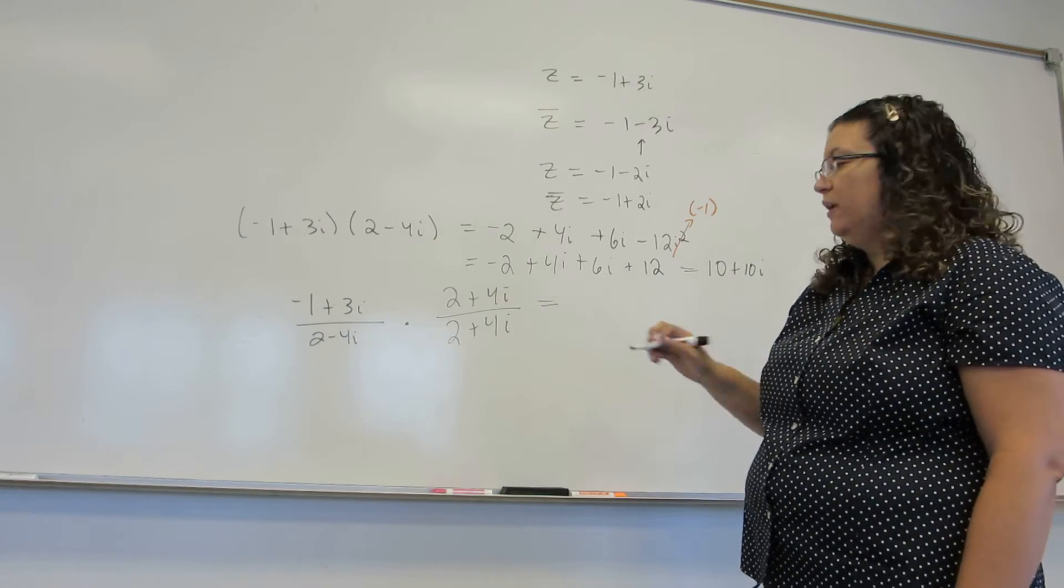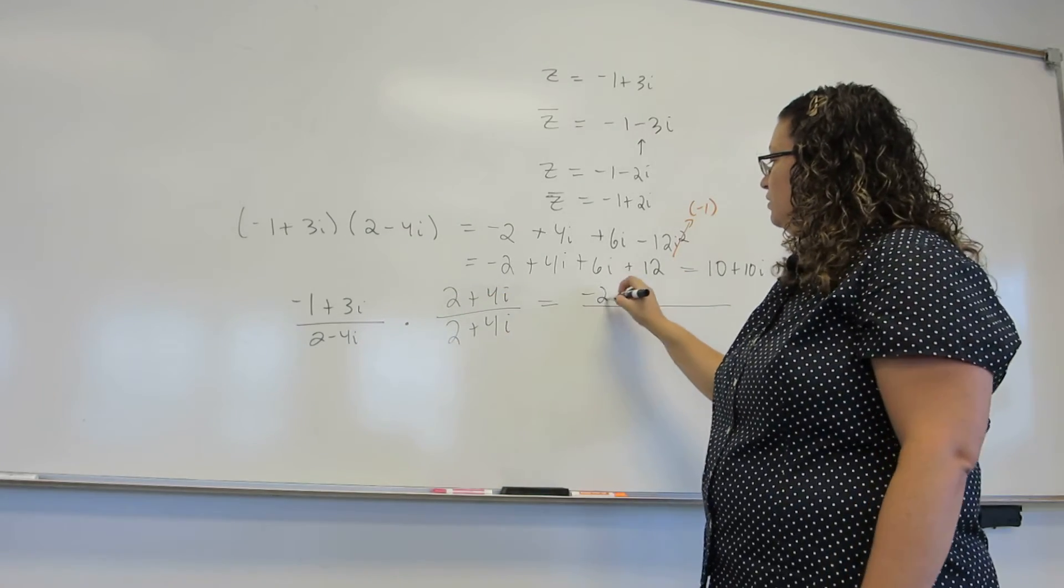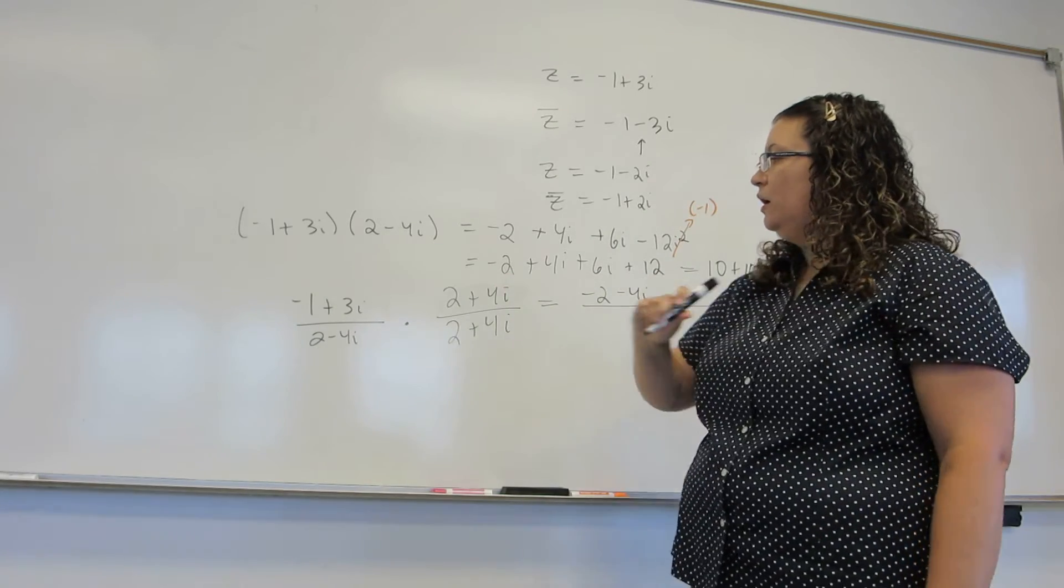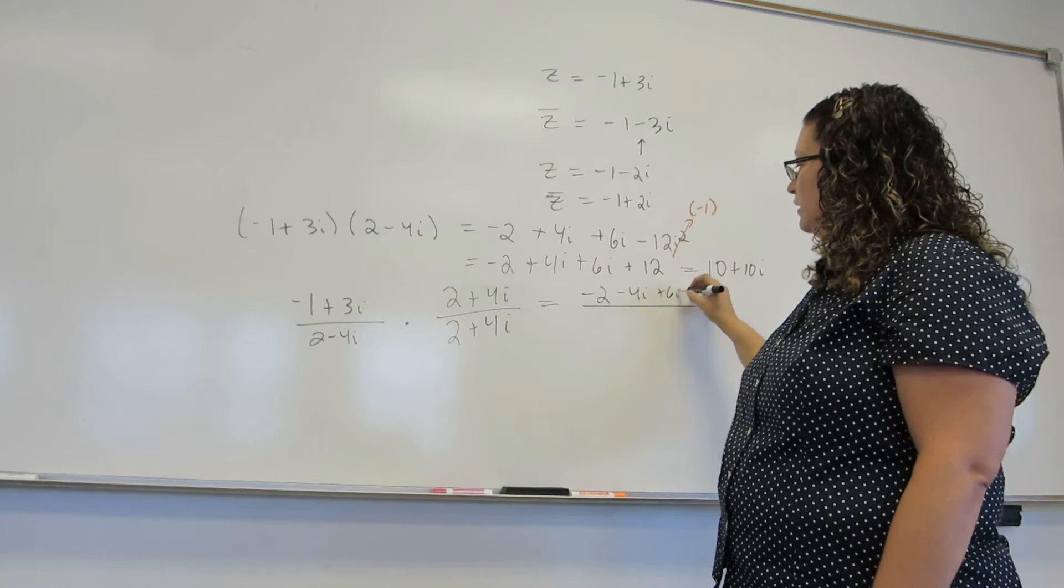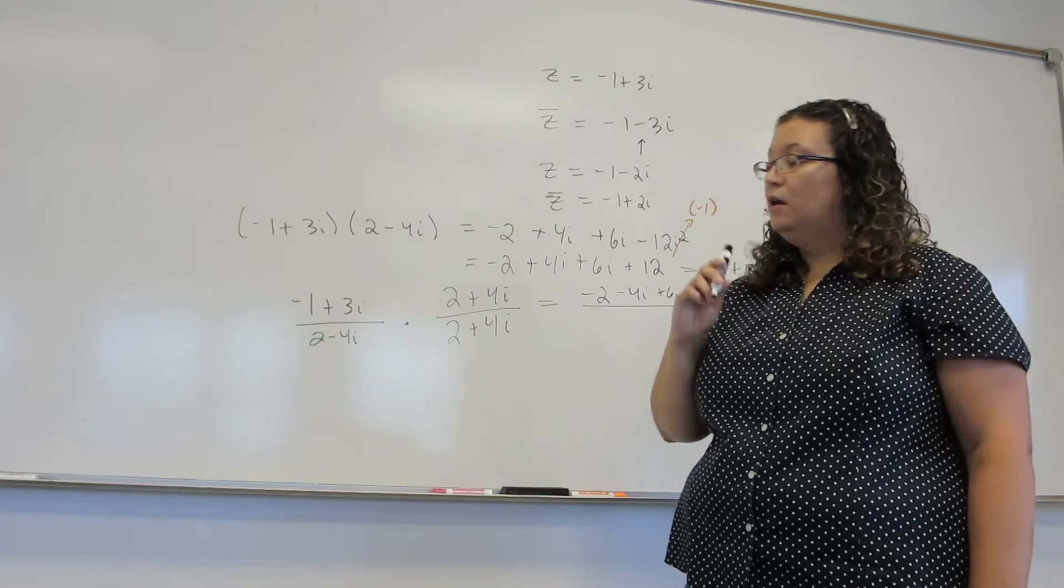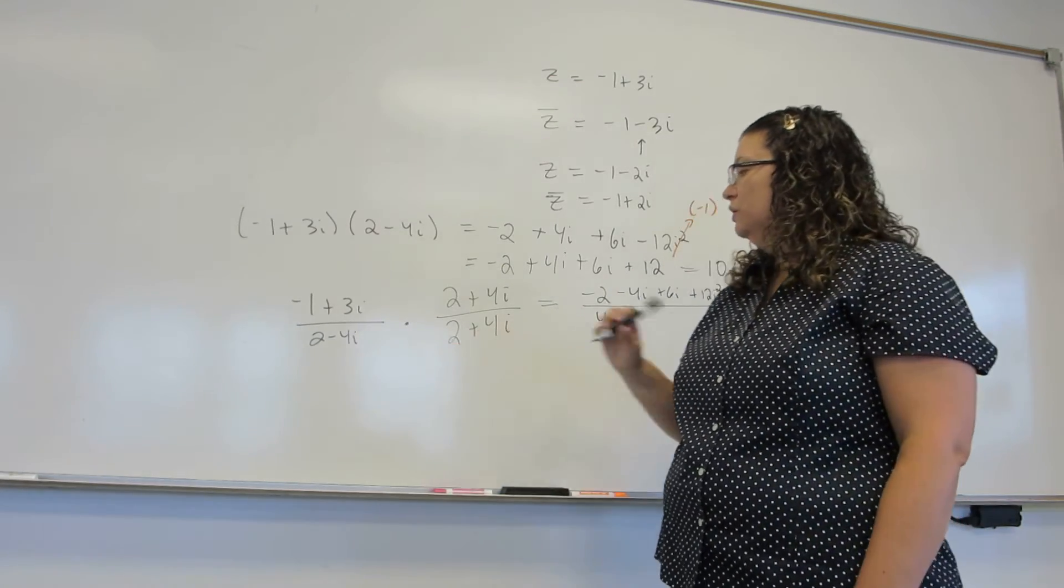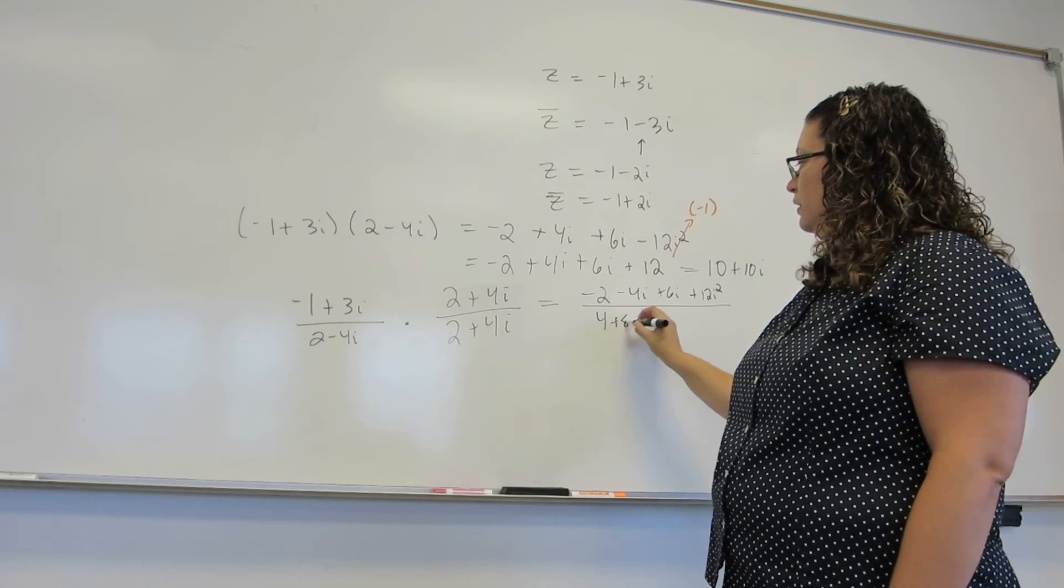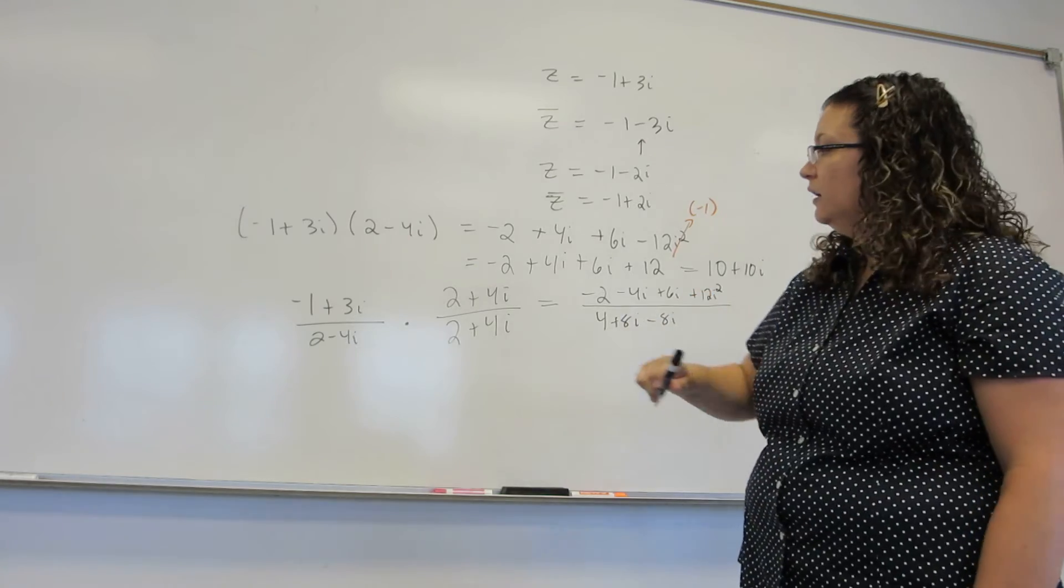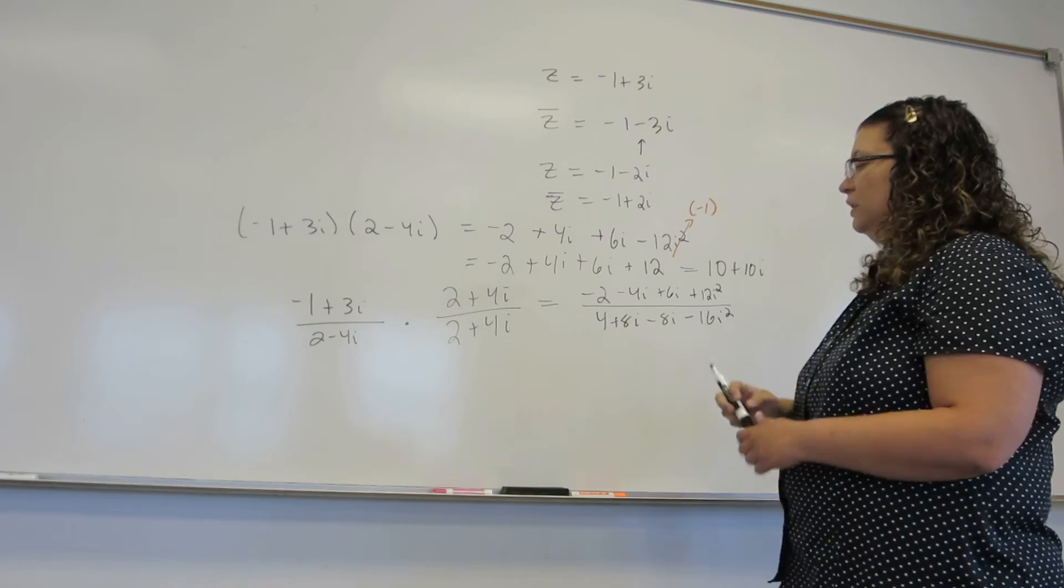And now we're going to FOIL and see what happens. So on the top, negative 1 times 2 is negative 2. Negative 1 times 4i is minus 4i. 3i times 2 is 6i. And 3i times 4i is 12i squared. On the bottom, 2 times 2 is 4. 2 times 4i is 8i. Minus 4i times 2 is minus 8i. And minus 4i times plus 4i is minus 16i squared.